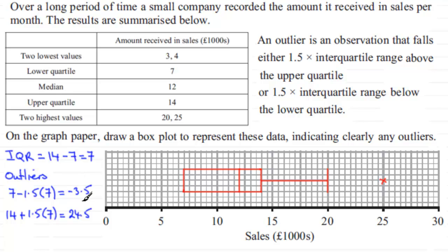For the lower side, the boundary is minus 3.5. We have values of 3 and 4, which are both above minus 3.5, so there are no lower outliers to mark. We simply take the lowest value, which is 3, mark it on the diagram with a bar, and join back up to the box.